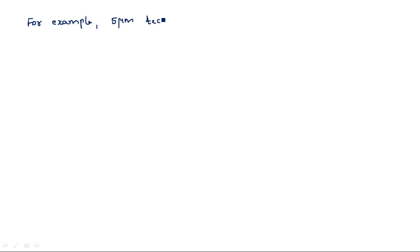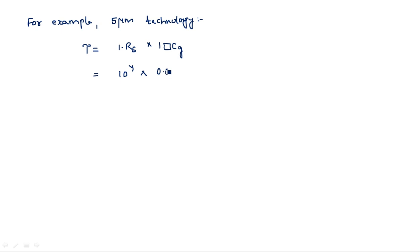Now let us see the time delay at different technologies. For 5 micrometer technology, tau equals 1 RS into 1 square CG, which equals 10^4 ohms into 0.01 picofarads — giving 0.1 nanoseconds. This is the time delay due to a sheet resistance of 10^4 ohms and a gate capacitance of 0.01 picofarads at 5 micrometer technology.